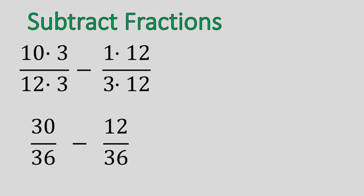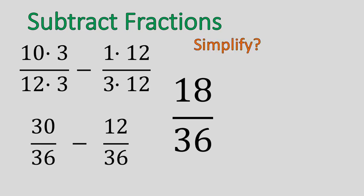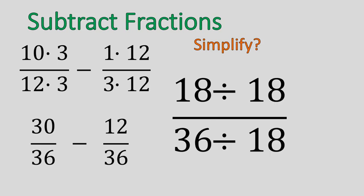When we subtract, we get eighteen over thirty-six. And we ask ourselves, can we simplify this fraction? Yes, we can. Eighteen and thirty-six have a very large common factor of eighteen. You can divide both by eighteen, and you'll get one-half. One-half is this fraction in simplest form. And we are done.